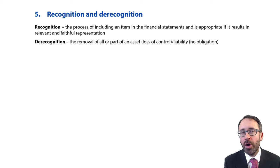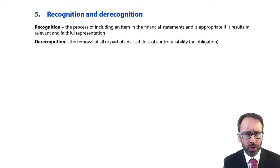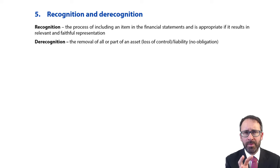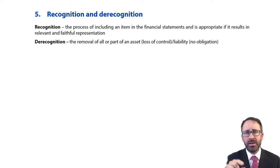So, we should know what the definition of an asset, liability, equity, income and expense are. I challenge you to just write them down now — just get a blank page of paper, put in the headings: assets, liabilities, equity, income, expense, and write down what they are.